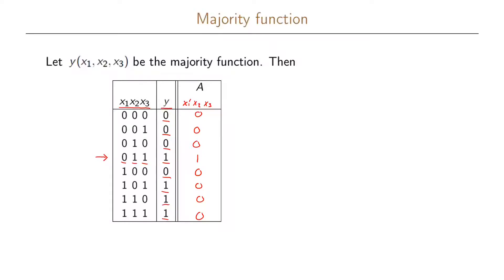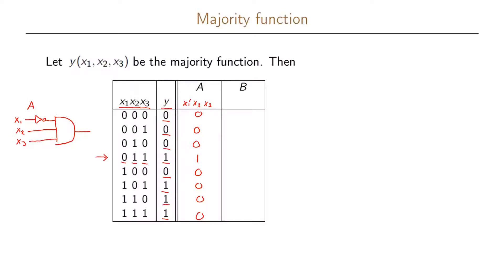To realize part A as a circuit, we take x1 and put it into an inverter to get its complement, then we have x2 and x3. Since the AND function only gives output one if all inputs are one, we connect x1 prime, x2, and x3 into an AND gate. This gives us the circuit realization of part A.